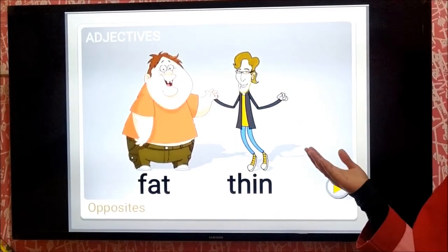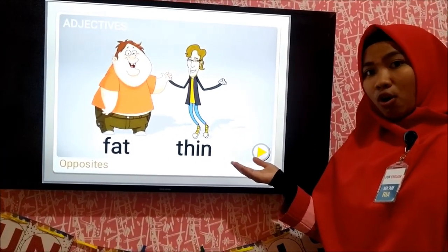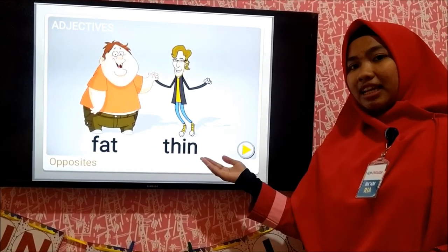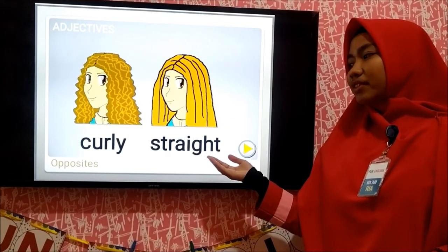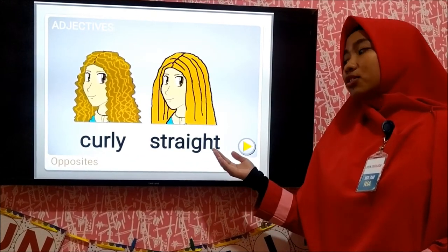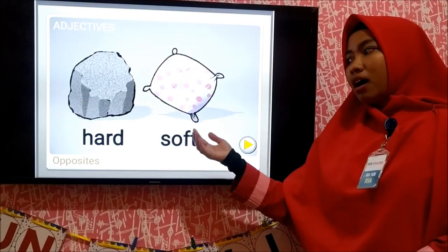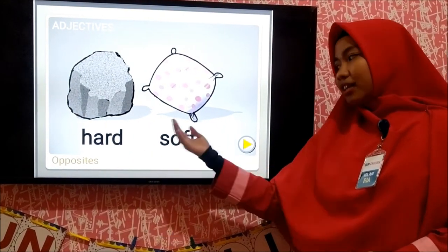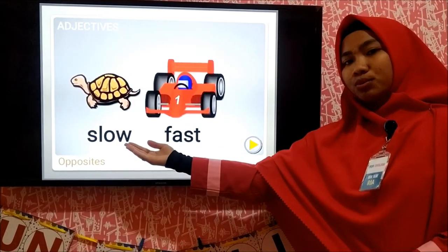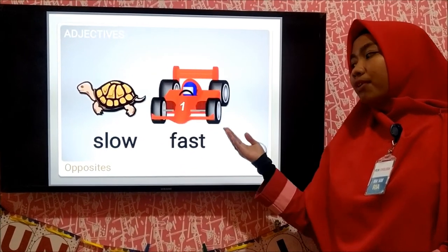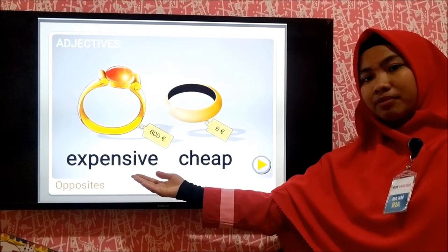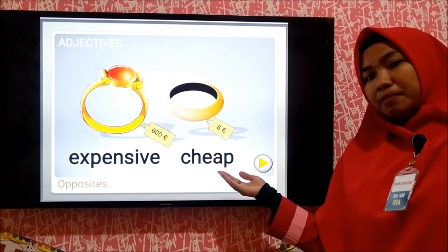Okay, I have another example of adjective you can practice at home: fat, thin, curly, straight, hard, soft. Next: slow, fast, expensive, cheap.